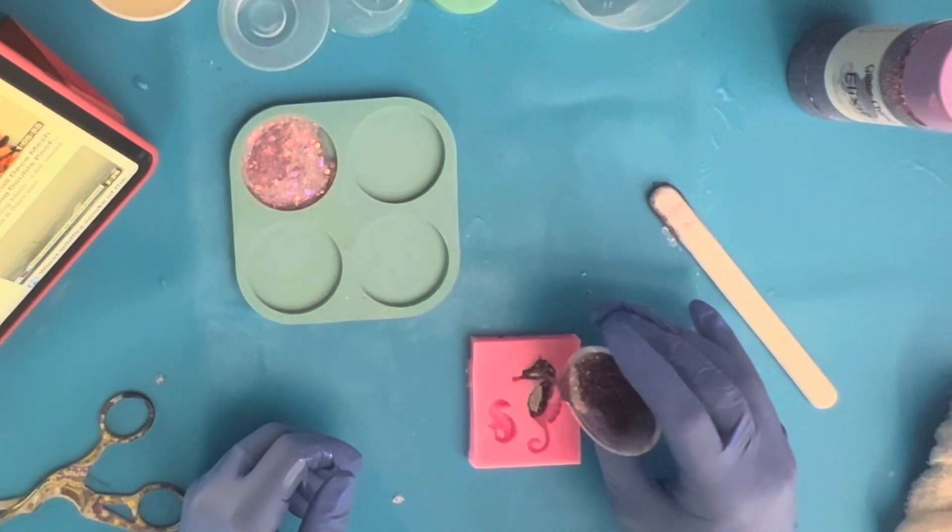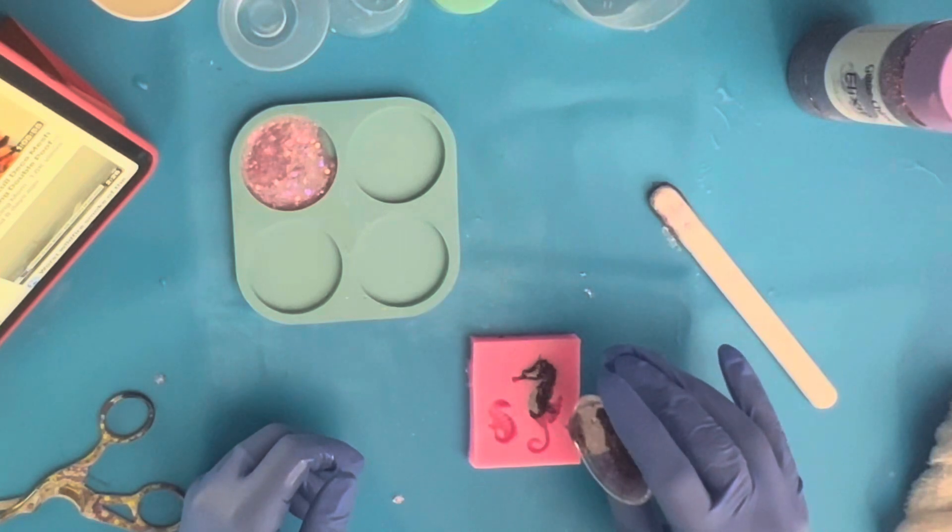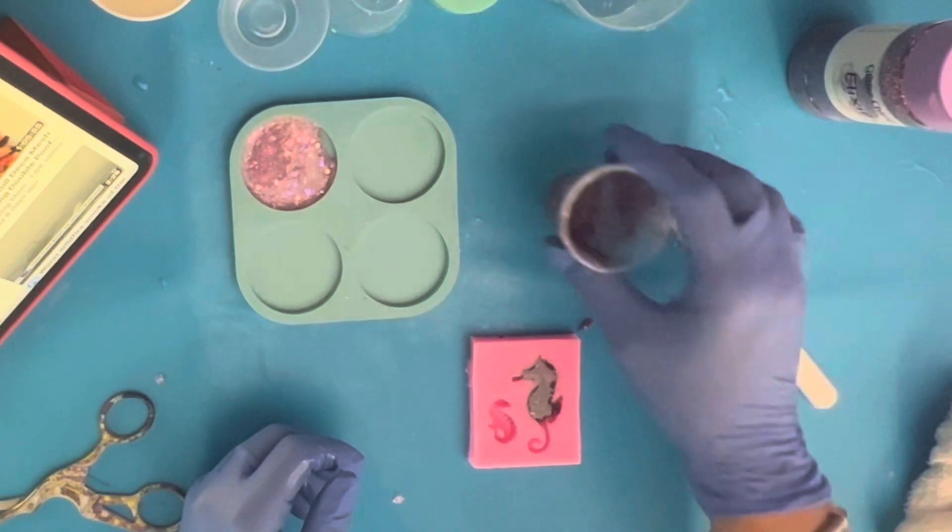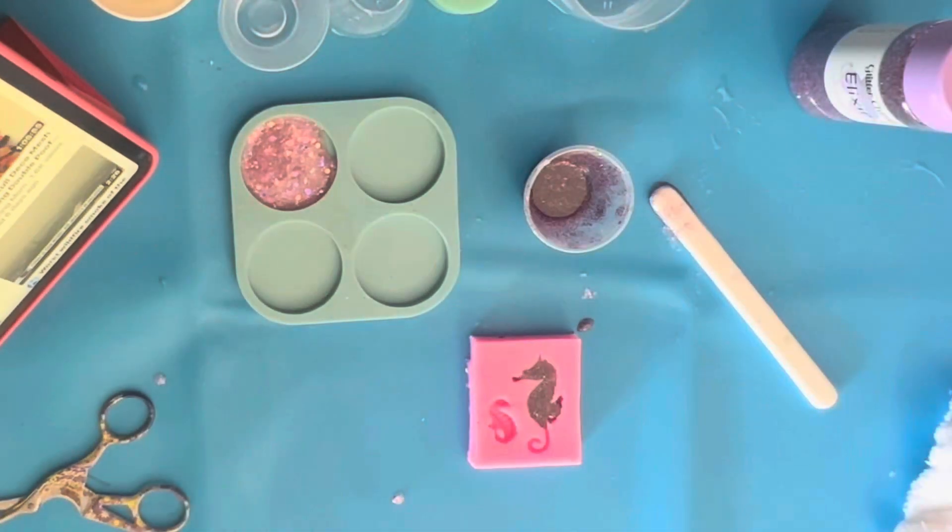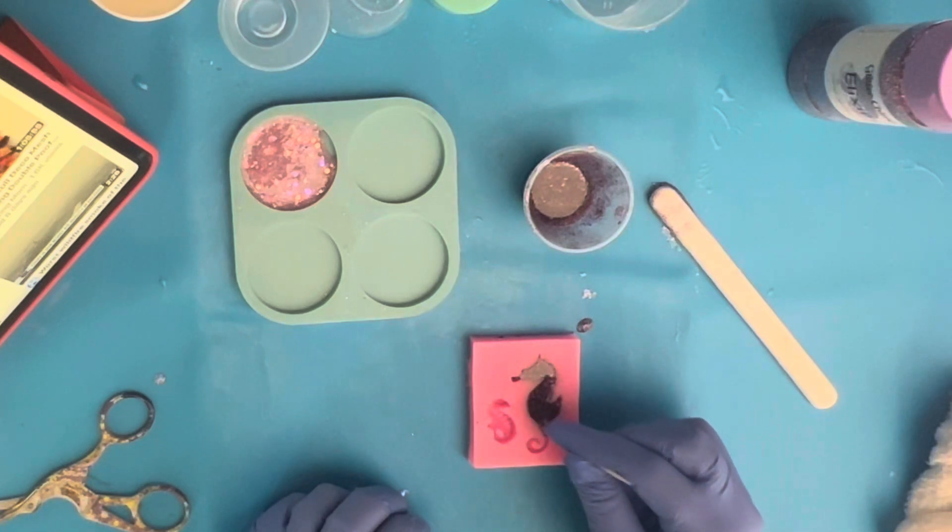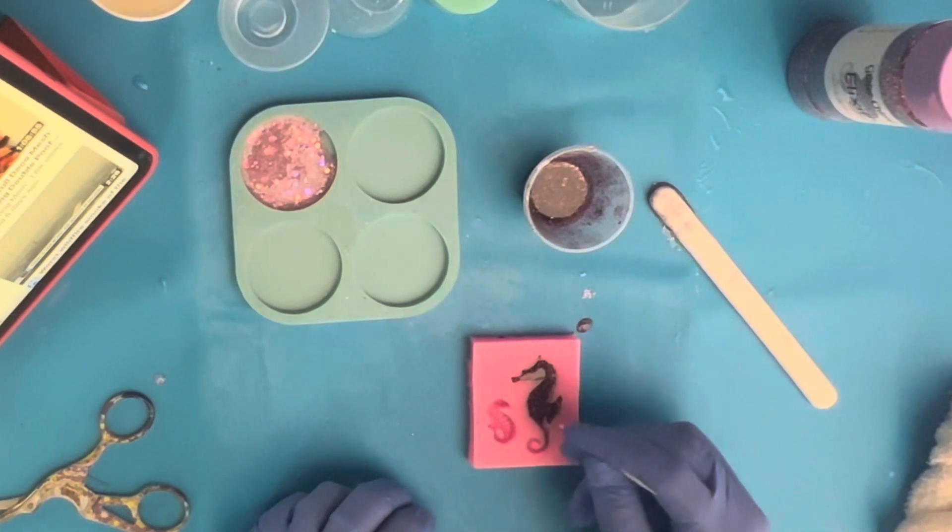So then we are going to take our epoxy, put it in our seahorse mold. This has little tiny pieces, so I do use a toothpick to really try and get in and make sure there are no holes, that everything is filled in really good. So when you're using something with just very thin lines, a toothpick is a great alternative to get it in there and make sure that it is all good.